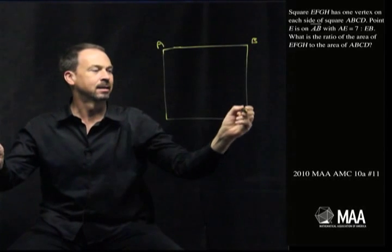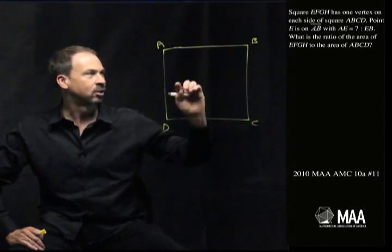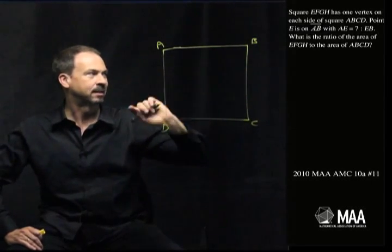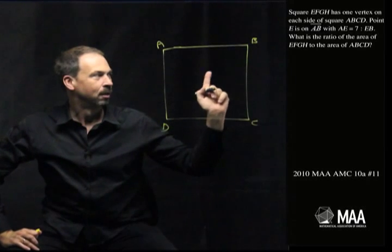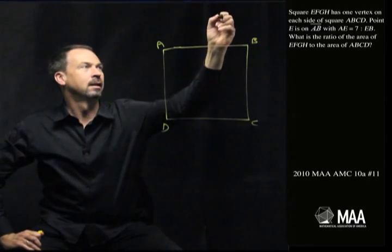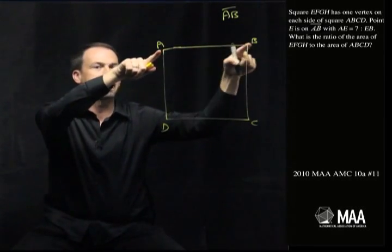Here's square ABCD and there's square EFGH with one vertex on each side of this guy. All right, so I've probably got a tilted square in this picture. But I've got some information. Point E is on the line segment AB. Okay, that's what the bar means. So E is somewhere along the side AB.